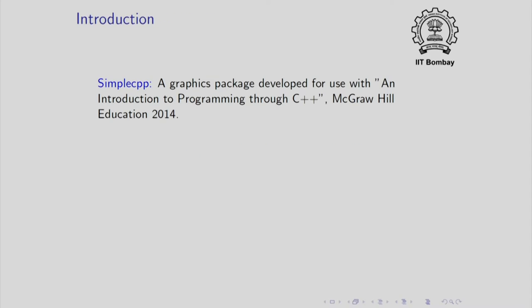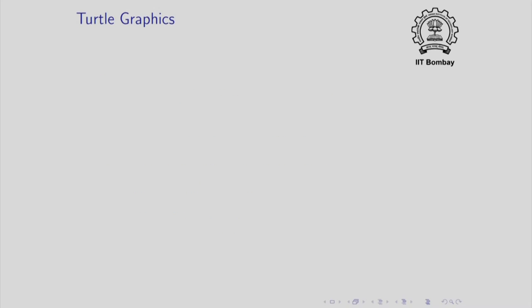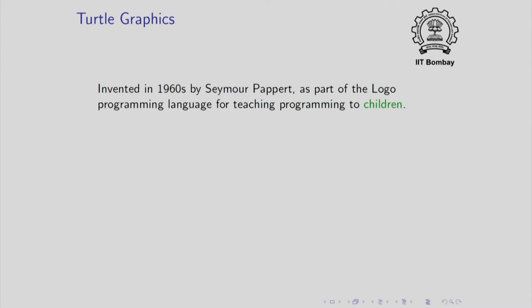Simple CPP is a graphics package developed for use with the book written by me called An Introduction to Programming Through C++, which was published by McGraw-Hill earlier this year. This package is available for Unix as well as Windows at www.cac.iitb.ac.in/~ranede/simplecpp. It supports two kinds of graphics as I said, turtle graphics and coordinate based graphics. Let me say something about turtle graphics. This is an idea and a package and a language invented in 1960s by Seymour Papert.